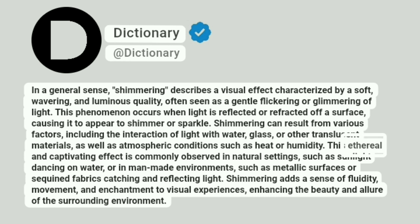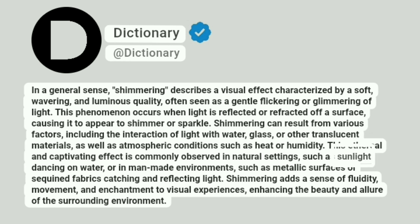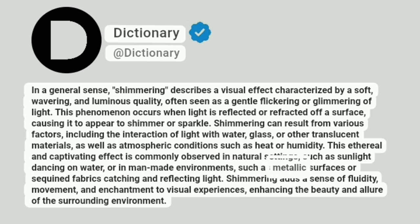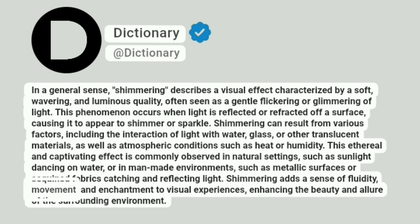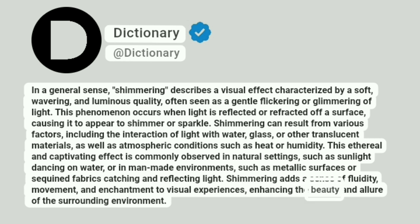This ethereal and captivating effect is commonly observed in natural settings, such as sunlight dancing on water, or in man-made environments, such as metallic surfaces or sequined fabrics catching and reflecting light. Shimmering adds a sense of fluidity, movement, and enchantment to visual experiences, enhancing the beauty and allure of the surrounding environment.